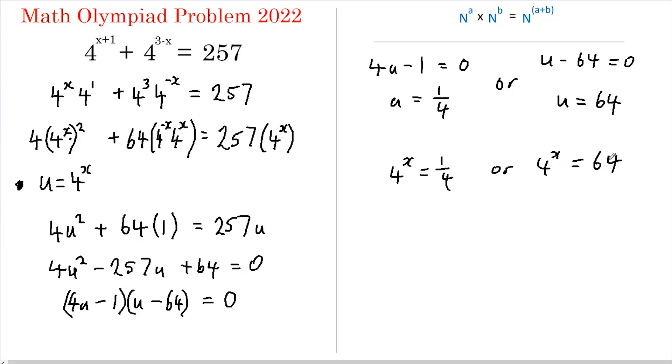If 4 to the x is 64 then x must equal 3, because 4 times 4 times 4 is 64. But over here what do we need to raise 4 to to get a quarter?